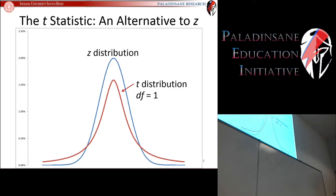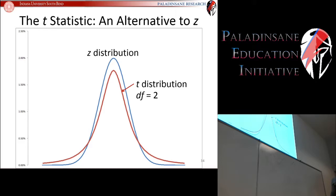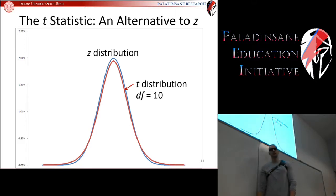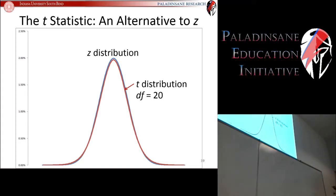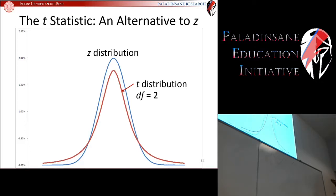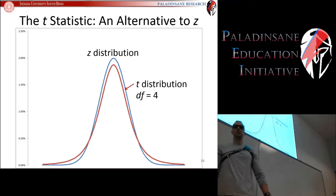Here's what a t-distribution looks like for one degree of freedom — that's a sample size of two. There it is for two degrees, three degrees, four, five, and for a sample size of eleven giving ten degrees of freedom, and a sample size of twenty-one giving twenty degrees. As you can see, it basically becomes a z-distribution as your sample size increases. So the t-distribution differs from the z-distribution: it's got more area in the tails, and its actual shape changes as sample size increases.